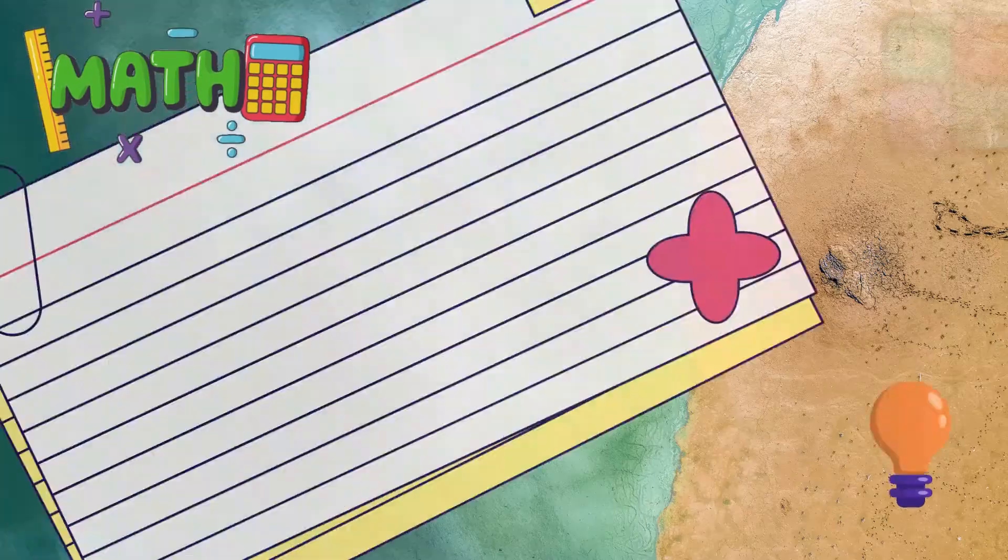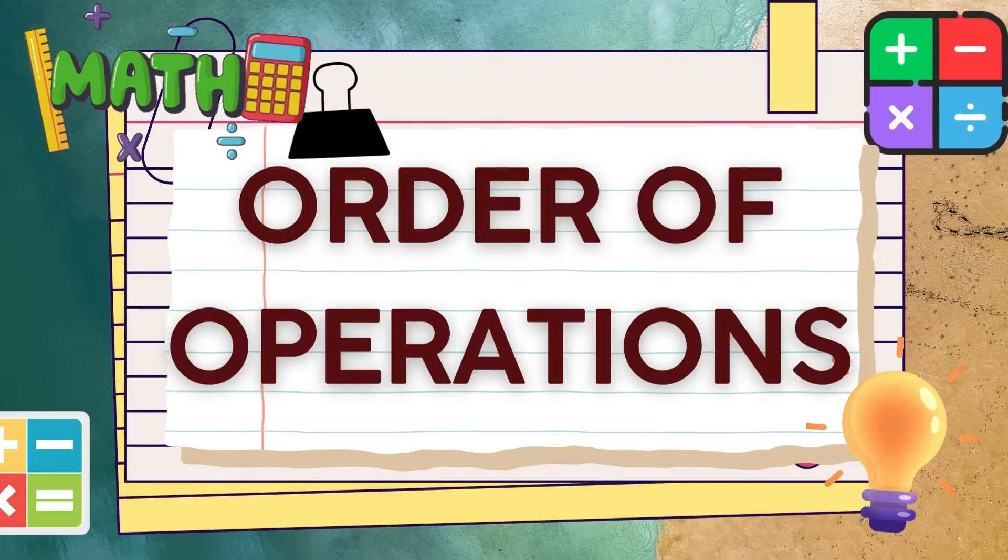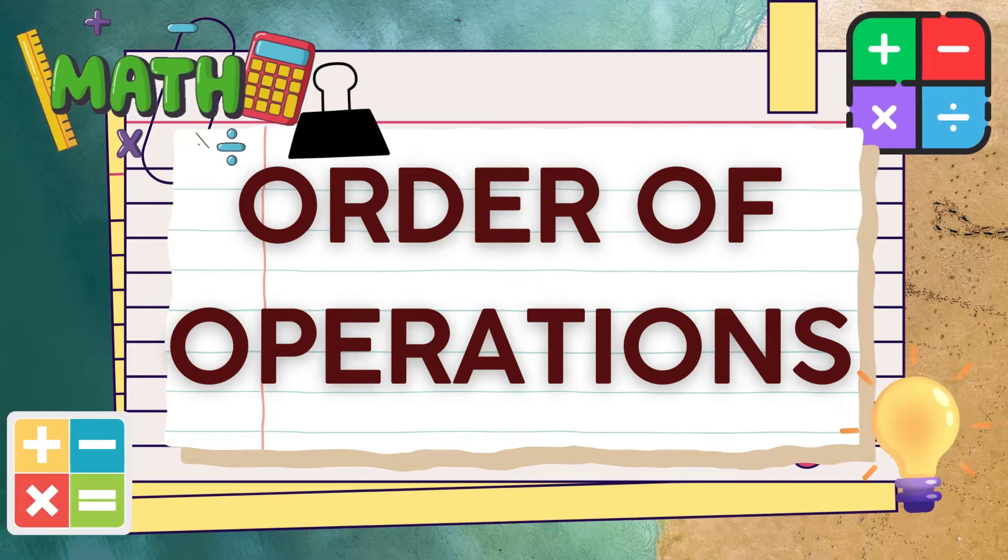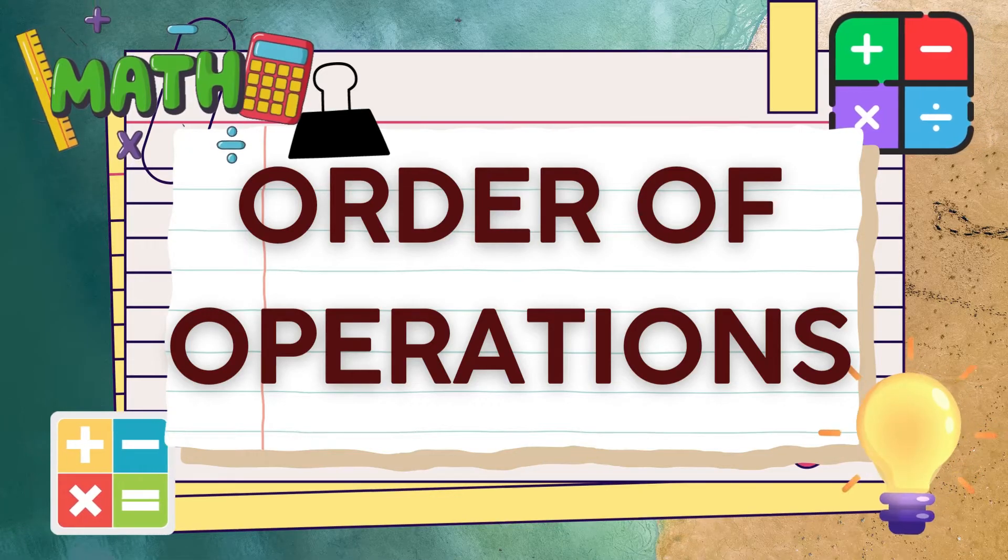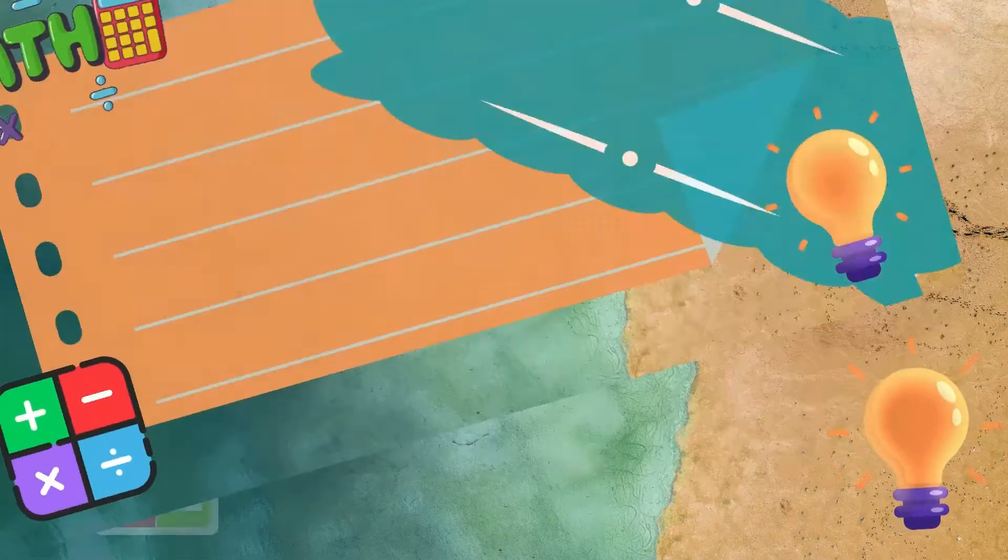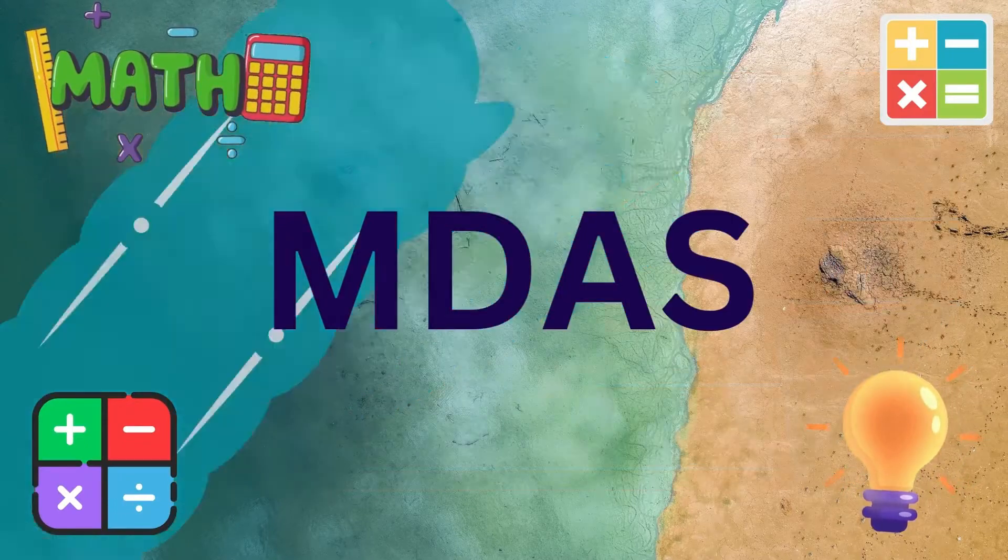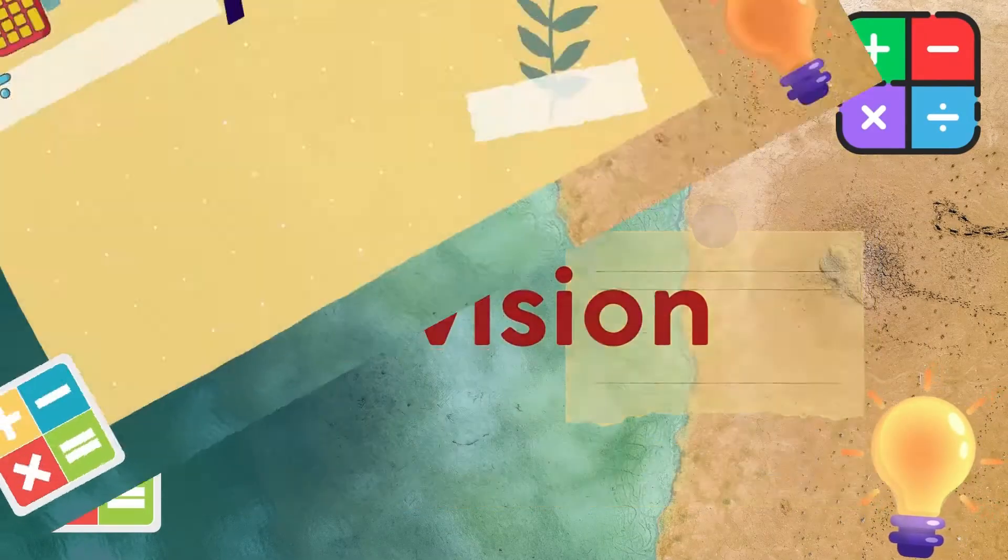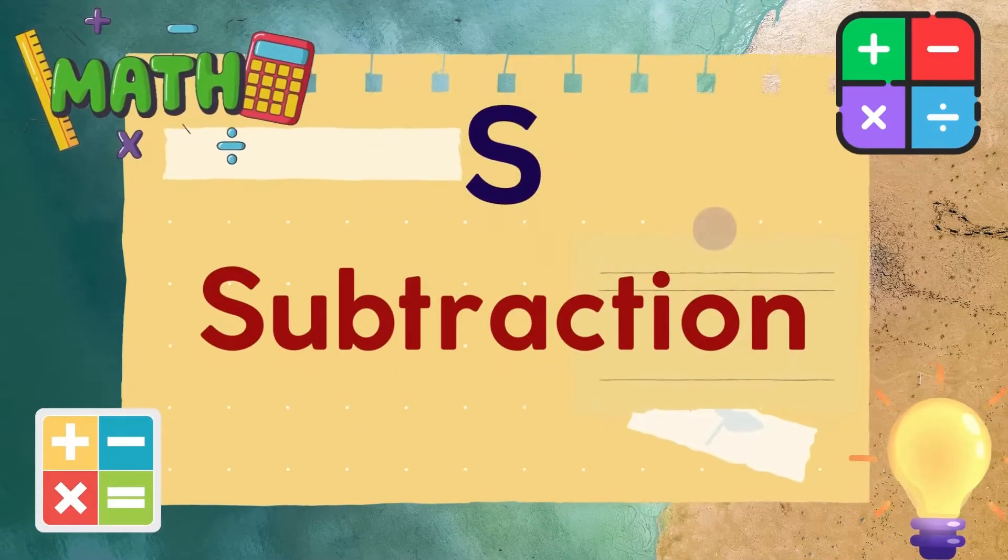Let's learn about the order of operations. This involves the four fundamental arithmetic operations. The MDAS stands for multiplication, division, addition, and subtraction.